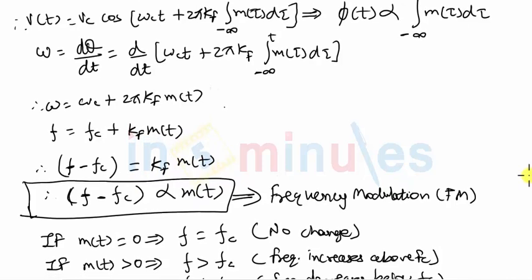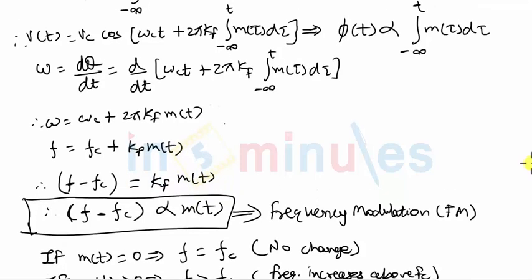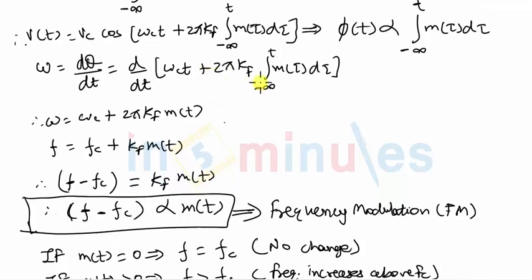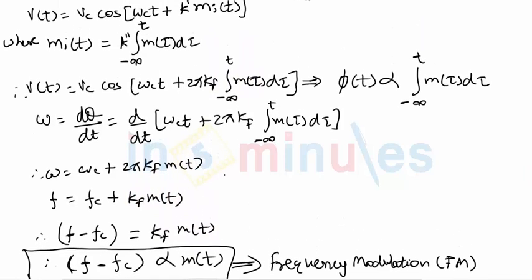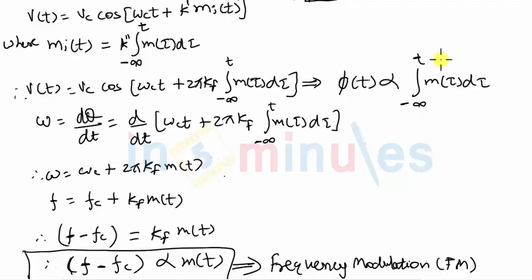The phase does not remain constant but how does the phase vary? The phase is going to vary in proportion to the integration of the modulating signal. So as you can see here, the phase was proportional to the integration of the modulating signal.